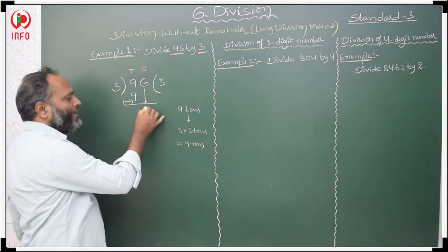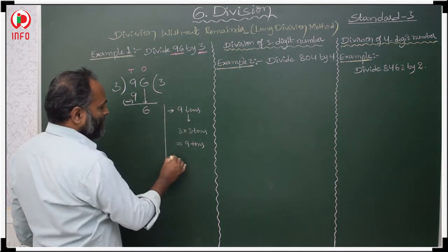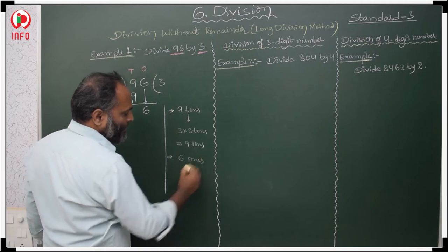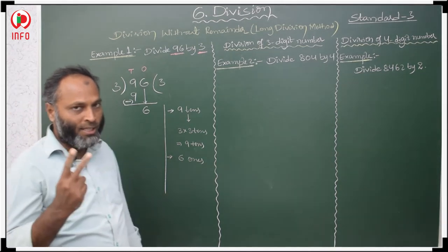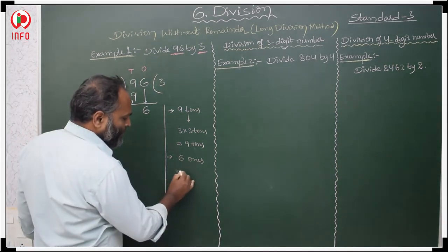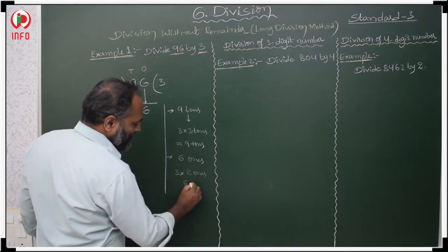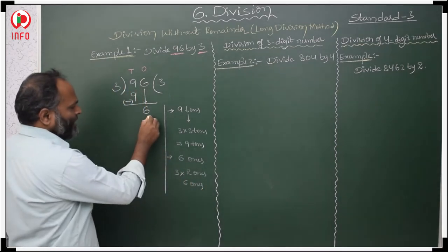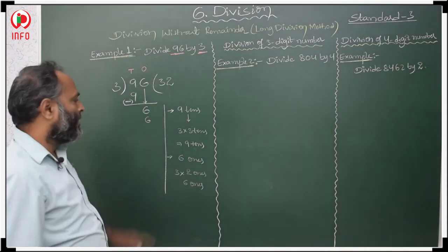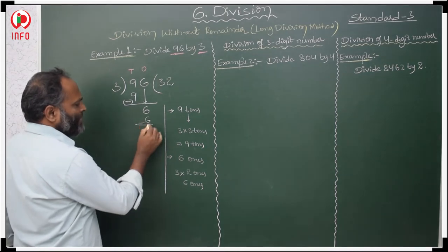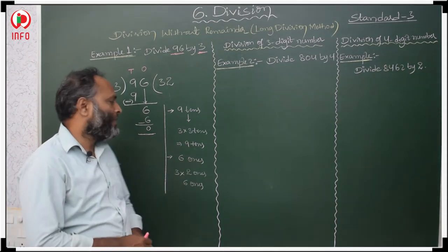Next, we copy the digit 6. In the second step, we have 6 ones. When will you get 6 ones in the 3 table? 3 ones are 3, 3 twos are 6 ones. So we write 2 in the quotient and 6 below. Same number minus same number is 0. So this division is without remainder — the remainder is 0. We take the 10's place first, then the 1's place.